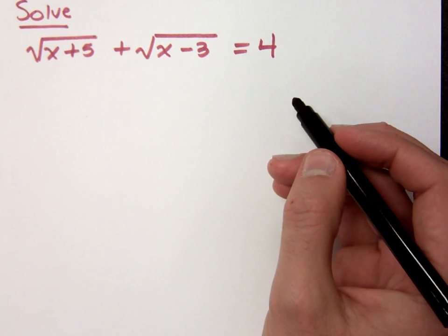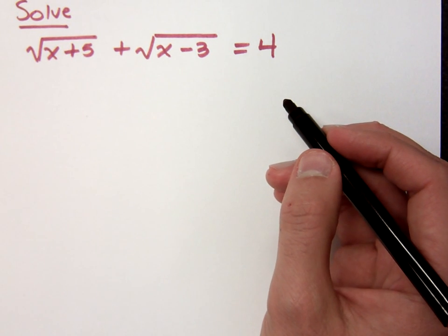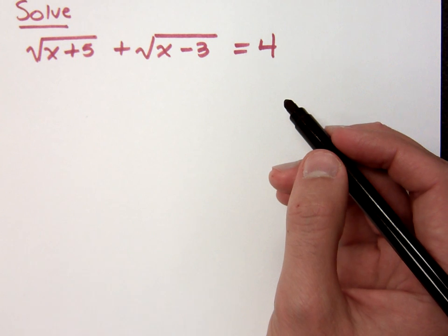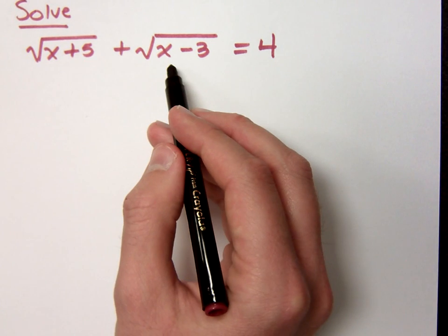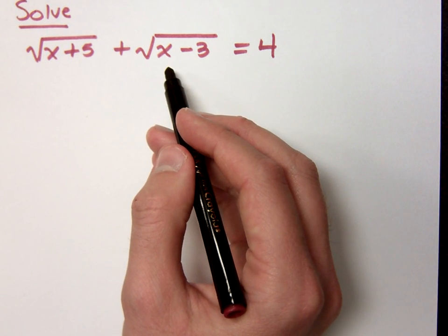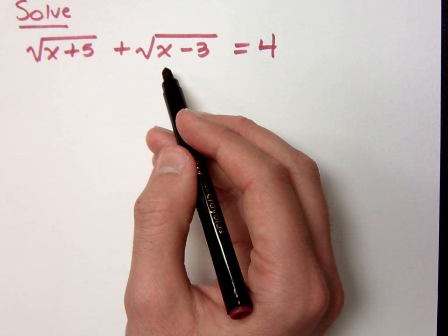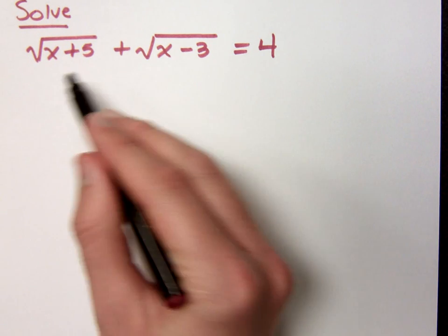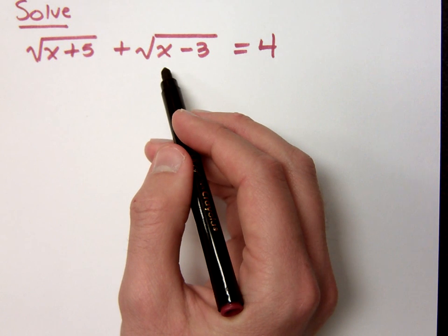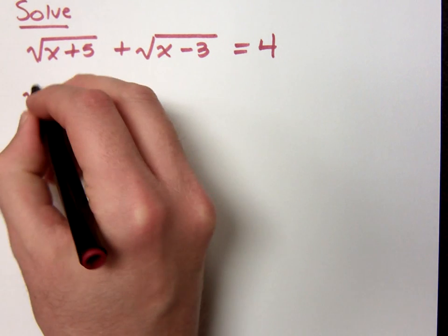Alright, now we have another radical equation. This one's a little bit more complicated than what we've seen before. In this problem, I've got two radicals. So, as we remember what the instructions said, it said to isolate a radical. That means you get one of these guys by itself. It doesn't really matter which one we pick. So I'm going to go ahead and get this first guy by himself.